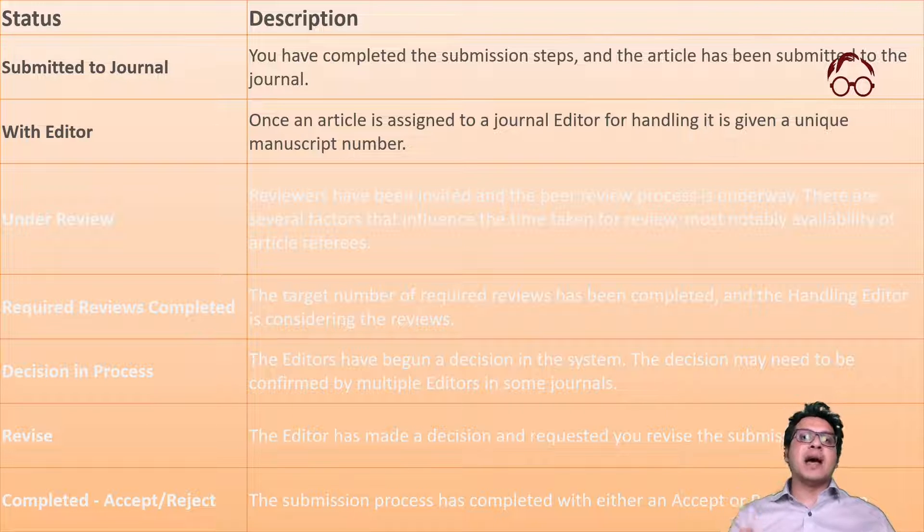If the editor decides to send the article for review, they will identify and invite some reviewers, and you will see the status 'Under Review.' However, before going to under review, you might get a rejection if your article is not novel enough, lacks sufficient contribution, or is simply out of scope for the journal. This is why you really have to read the author guidelines and scope of the journal carefully before submitting. If the editor thinks the article is worthy and fits the scope, they will invite reviewers, and the review process often takes three to six months, though some journals are faster.